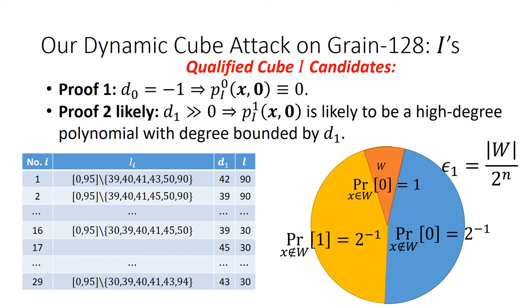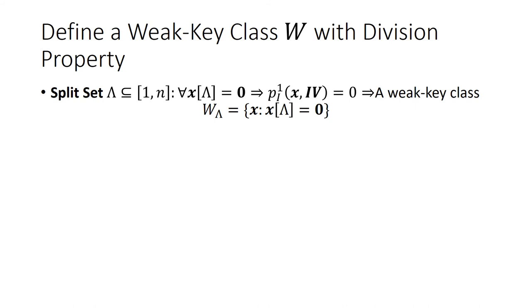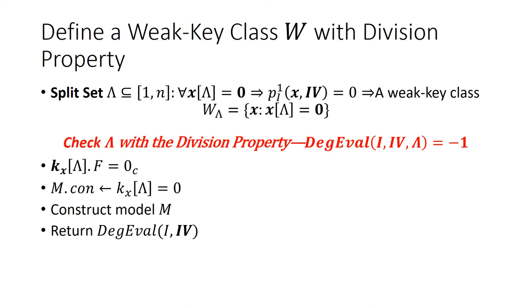For each cube, we need to construct the weak key classes for the wrong key guesses. We first introduce a weak key class defined by a subset of key indices called a split set, denoted as lambda. Any key x that satisfies that the entries at their position at lambda are all 0, the corresponding superpoly value is constant 0. The split set can be easily checked with a modified division property based degree evaluation technique. Before the model construction, the flag values corresponding to the split set entries are all set to 0. With such flag values, additional constraints should be imposed accordingly. With such a model M, the degree evaluation should always return minus 1 indicating that the superpoly is constant 0 corresponding to such weak keys.